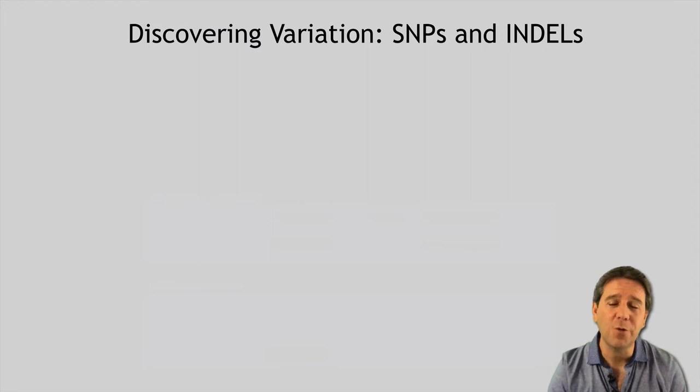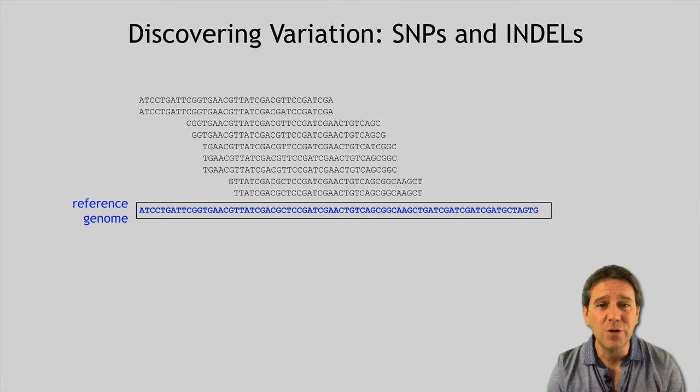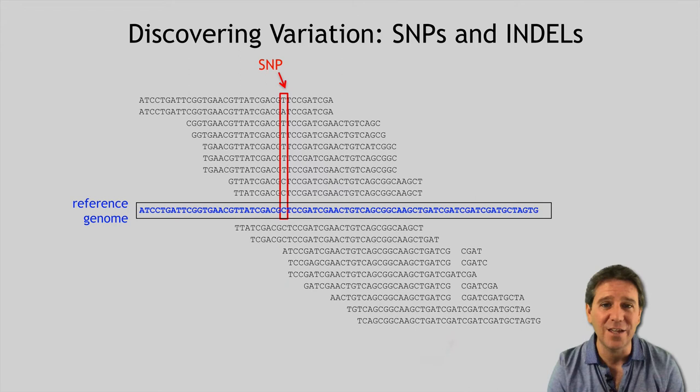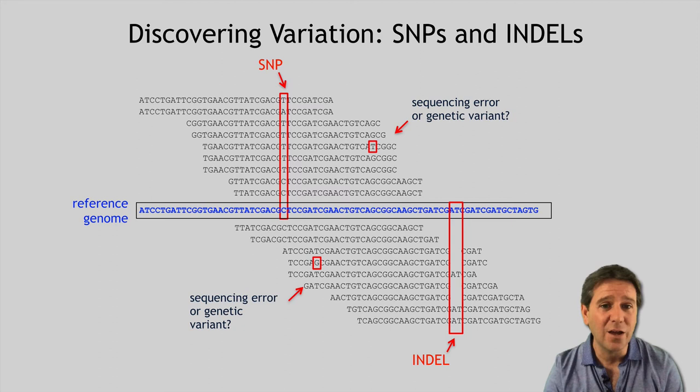This is perhaps more easily demonstrated with an animation like this one, where we have a reference genome in blue, then our sequencing reads in black aligning to this region. As the reads pile up, we start to see support consistently for a position like this one in the red column, where we see a consistent difference between our reads versus our reference. In other places we might see evidence for indels or small scale structural variants, and in other regions we might not see consistent changes—this is likely a sequencing error.